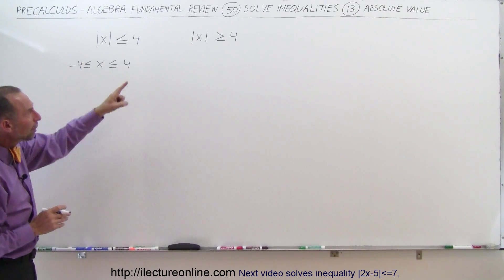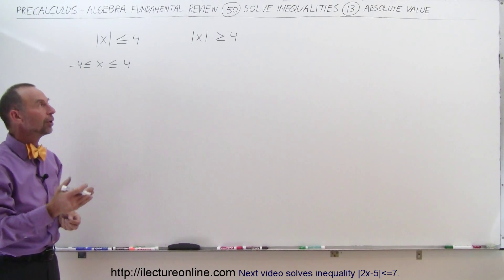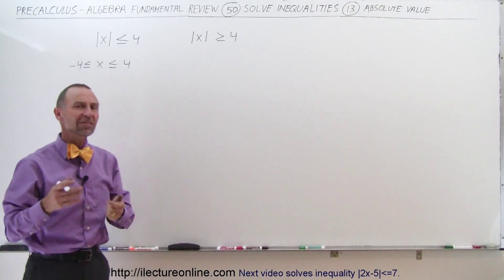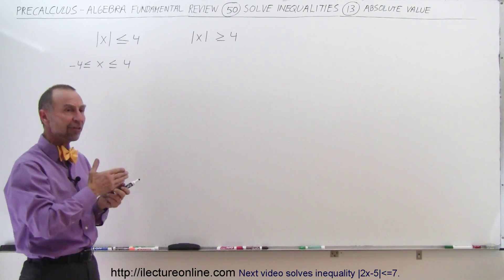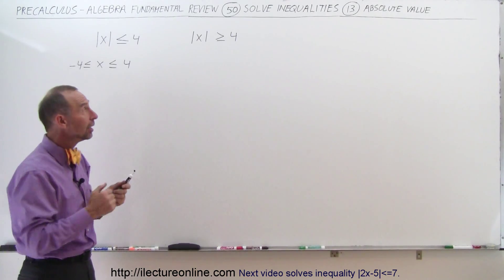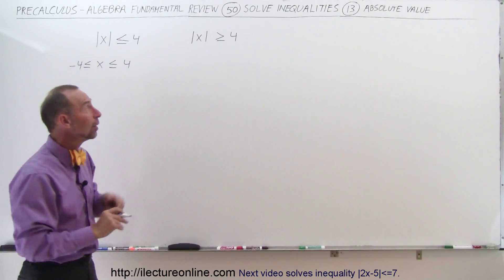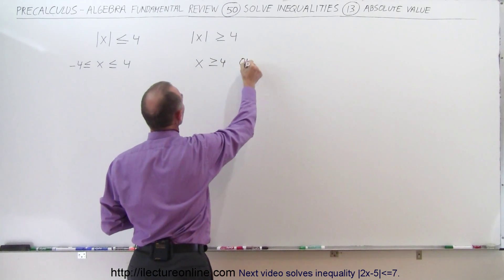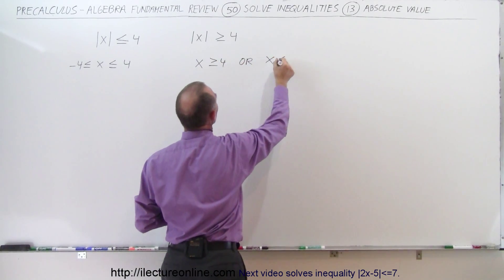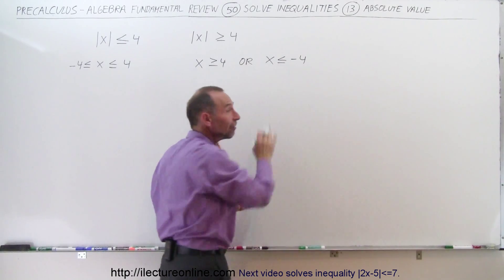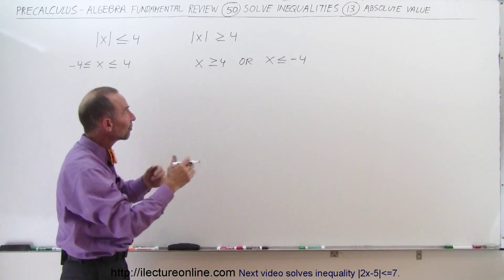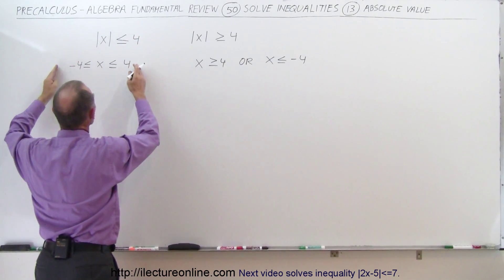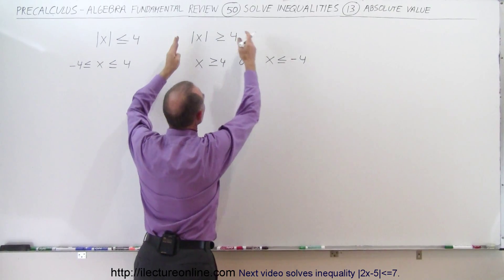What about if the absolute value of x is greater than or equal to 4? Well, that means 5, 6, 7, and 8. But what if x is a negative number? What if x is negative 5? When we take the absolute value of it, it becomes a positive 5, which is bigger than 4 again, which means x can be greater than or equal to 4, or x can be less than or equal to negative 4. Because if x is like negative 5, the absolute value becomes 5 — it's bigger than 4.